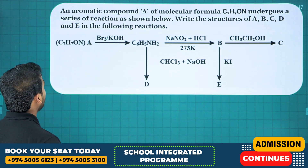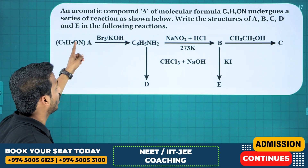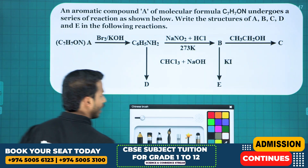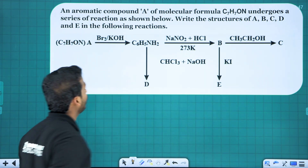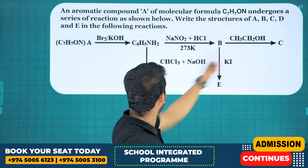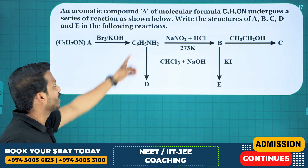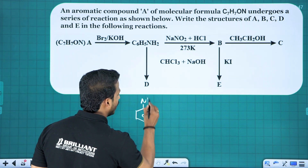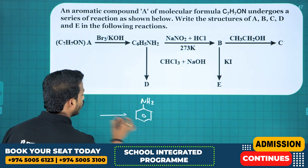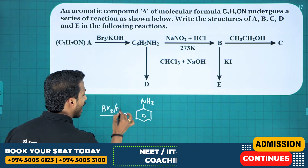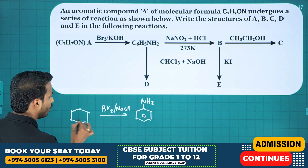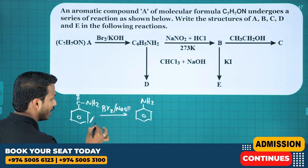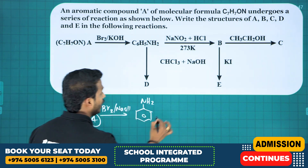An aromatic compound A of molecular formula C7H7NO undergoes a series of reactions. The given compound C6H5NH2 is aniline. To get aniline via Hofmann degradation, the amide must be benzamide (C6H5CONH2), so A is benzamide. Aniline on diazotization gives diazonium salt (N2+Cl-) as compound B.